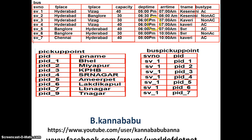If you observe clearly the bus pickup point table — SV1, PID — what are the pickup points of SV underscore 1? You go to bus pickup points: SV underscore 1's pickup point is PID underscore 1, that is BHL. Similarly, Miyapur, KPHB, S.R. Nagar, Amir Pet, Abdikapul, Alvinagar. All these are the pickup points belonging to SV1. Similarly, there will be pickup points for SV2, SV3, and so on.